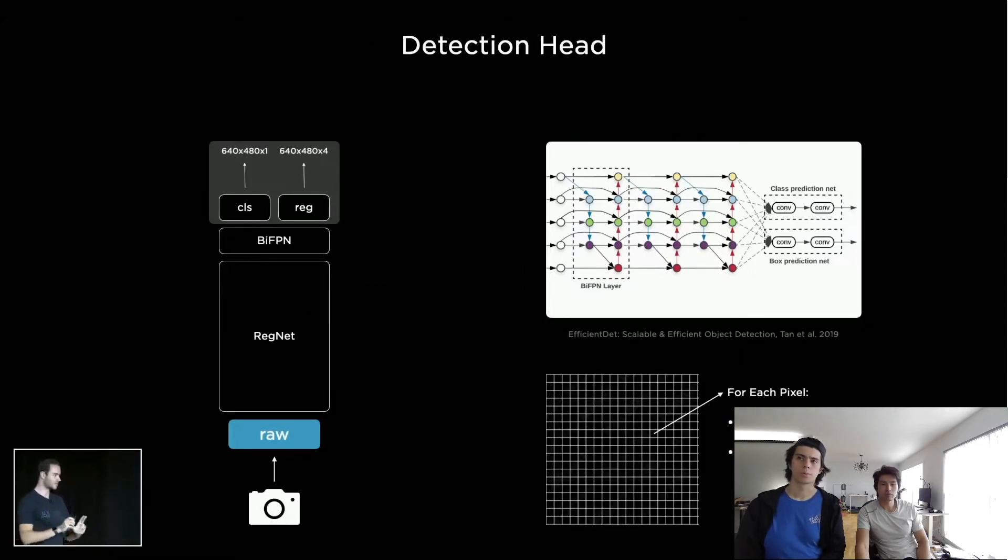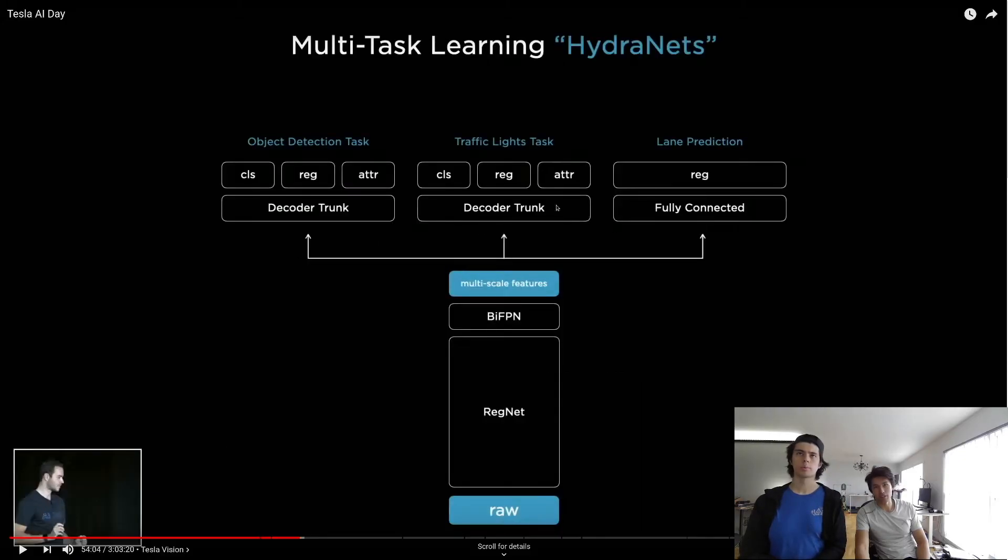Very quickly we discovered that we don't just want to detect cars, we want to do a large number of tasks. We wanted to do object detection with each of these: object detection, traffic light detection, lane detection.